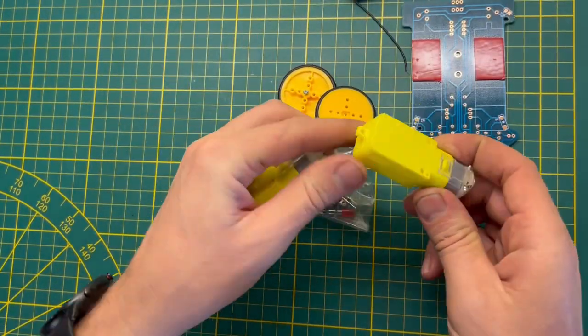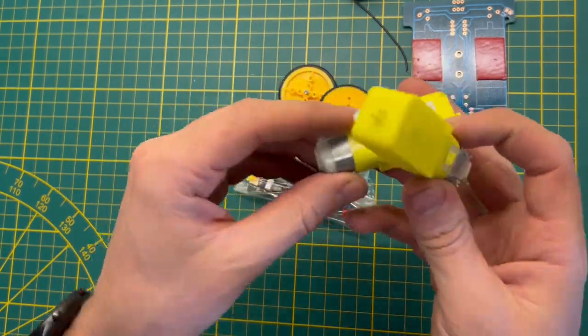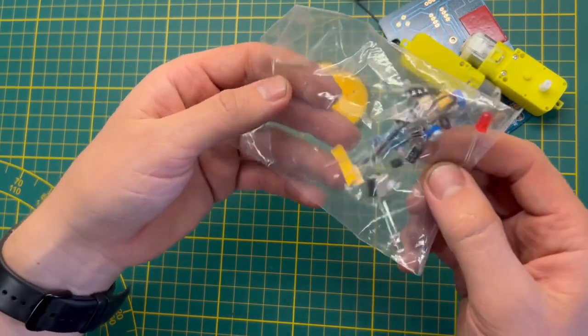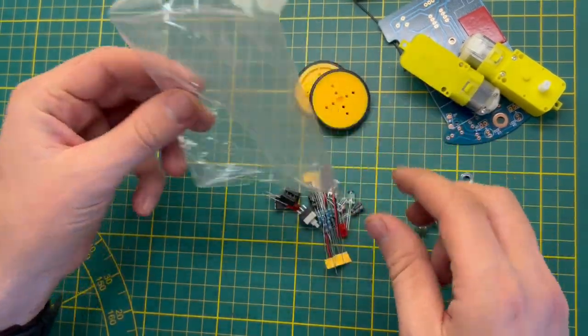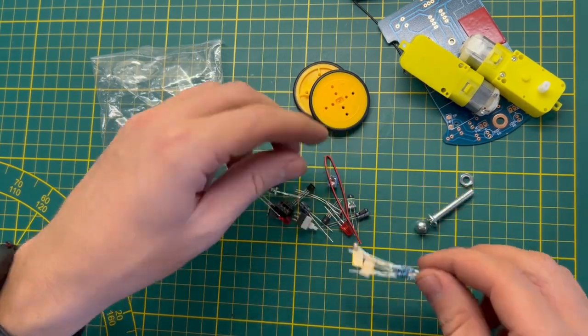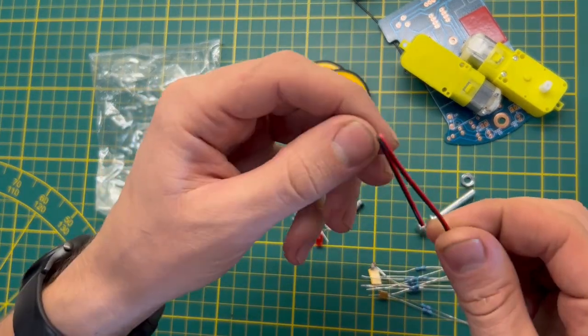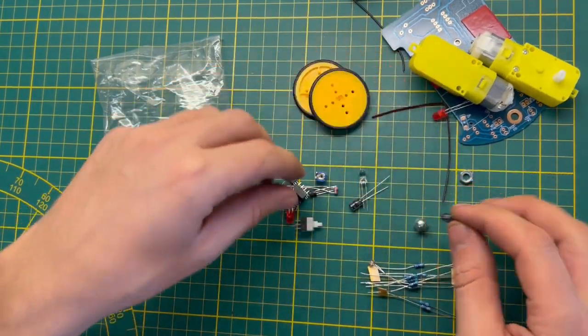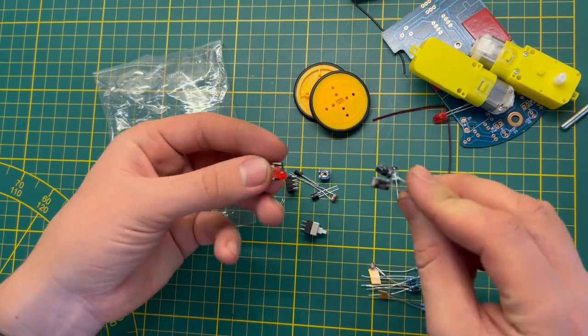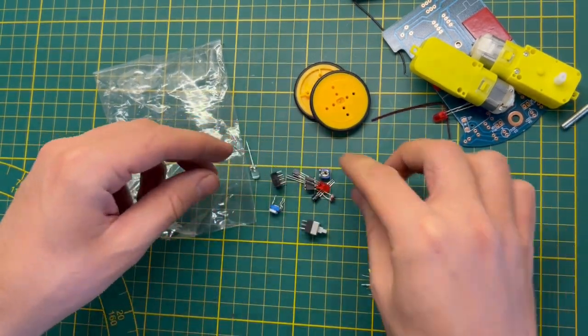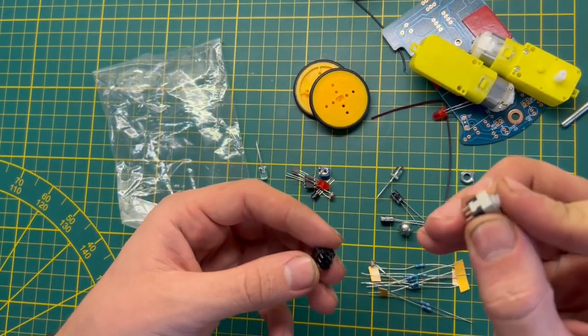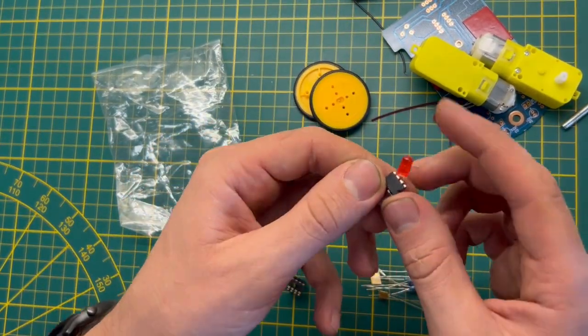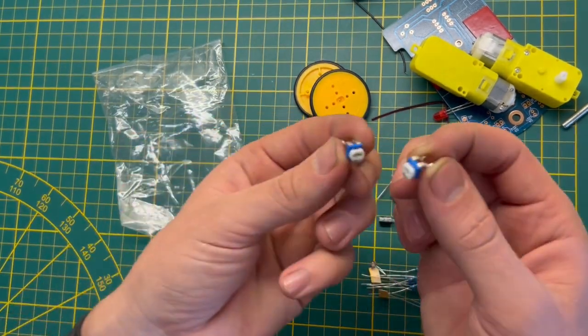Two motors with gearbox, wheels, and all other electronic stuff including resistors, one more wire, capacitors, we have an on-off switch, one chip, and a few potentiometers.